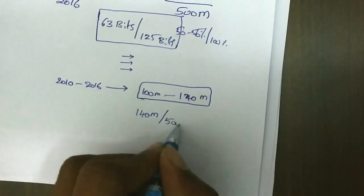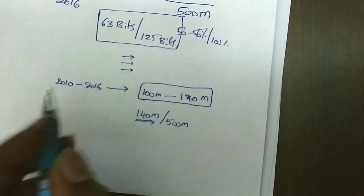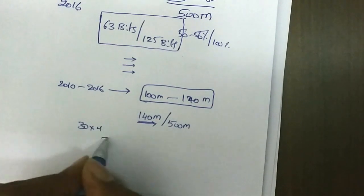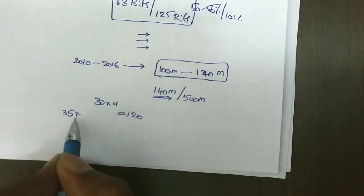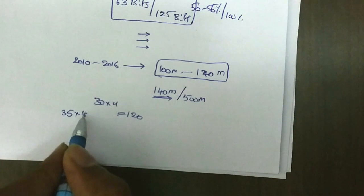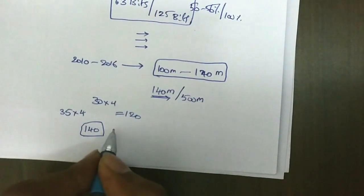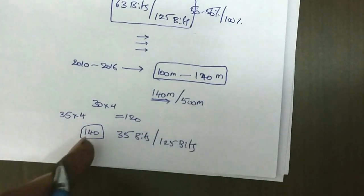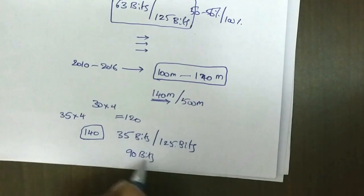140 marks out of 500 — so how many questions should you attempt? One question carries four marks. If you pick the answer for exactly 30 questions, 30 into 4 gives only 120 marks. Instead, if you pick exactly 35 questions, 35 into 4 equals 140 marks. So your target for GPAT is 35 questions out of 125. You can leave 90 questions — no need to pick the answer for those 90.